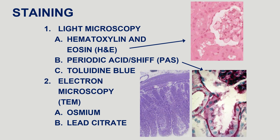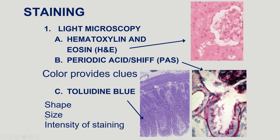Our next stain is the PAS stain, or Periodic Acid-Schiff stain, which stains carbohydrates and sugars. Sugar-rich parts of the cell — the plasma membrane and basement membrane — stain a bright magenta-purple color. The next stain is toluidine blue, where everything is blue; it's the change in intensity that clues you in on what's going on. In all of these stains you also use the shape, size, orientation, and intensity to interpret what you're looking at.